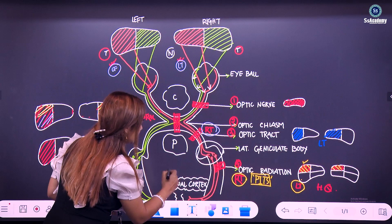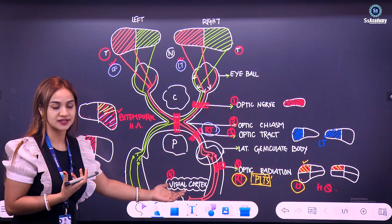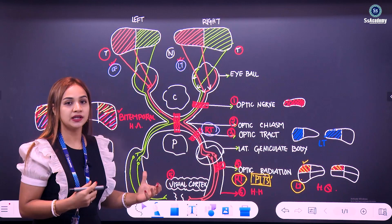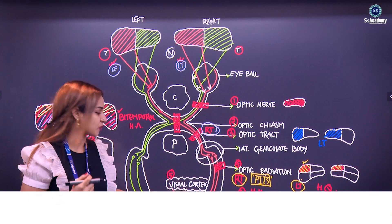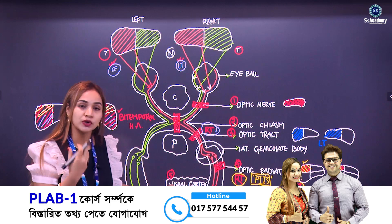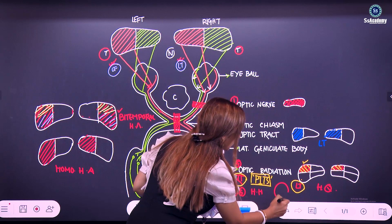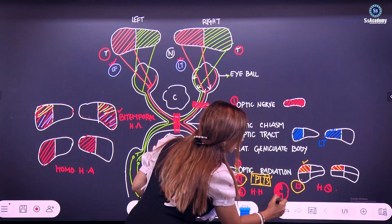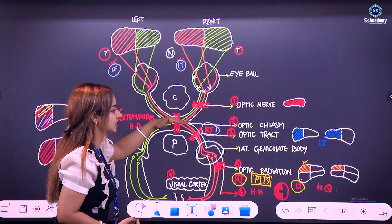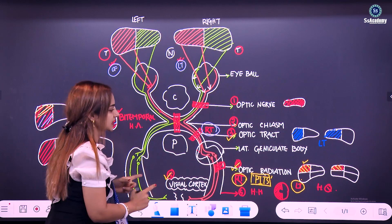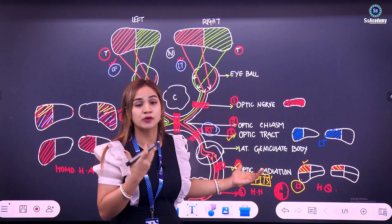The fifth point: if there is any lesion in the visual cortex or the occipital cortex, the defect is similarly called homonymous hemianopia but with macular sparing, because the macular fibers are not present in the visual cortex. So any defect in the visual cortex or occipital cortex gives rise to homonymous hemianopia with macular sparing. The macula in the visual field will be spared.